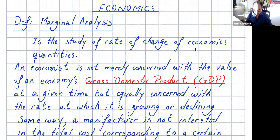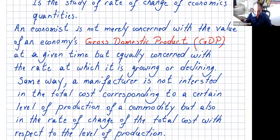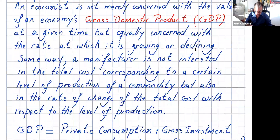In economics, we are not merely concerned with the value of an economic quantity like gross domestic product — GDP — at a given time, but equally concerned with the rate at which it's growing. Remember, rate in calculus is the derivative, so growing or declining. Similarly, a manufacturer is not only interested in the total cost at a certain level of production, but also in the rate of change of total cost with respect to the level of production.